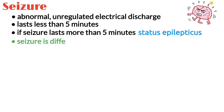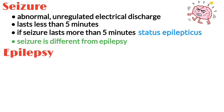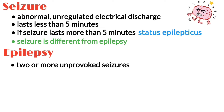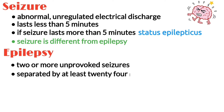A seizure is different from epilepsy. Epilepsy is typically diagnosed when an individual has two or more unprovoked seizures separated by at least 24 hours.